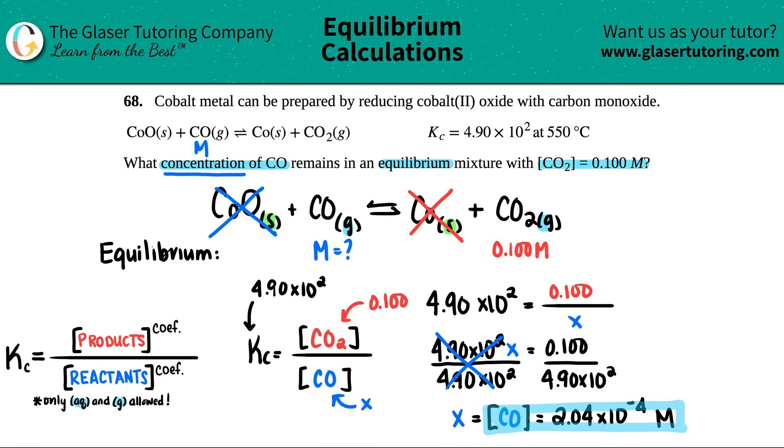That's the answer. They said what concentration remains - that's the same thing as saying what is the concentration. What's the concentration of CO that's at equilibrium, that remains at equilibrium? It's this amount: 2.04 times 10 to the negative fourth molarity.